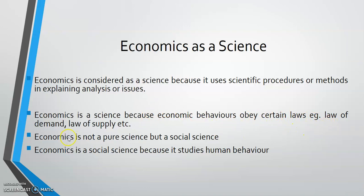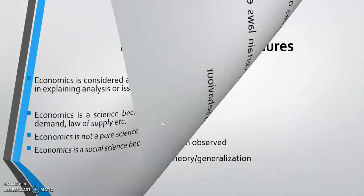It is also considered a science because economic behaviors obey certain laws, such as the law of demand and the law of supply. Economics is not a pure science like biology, chemistry, or physics, but it is a social science, because it studies human behavior — in other words, the subject matter is human beings.